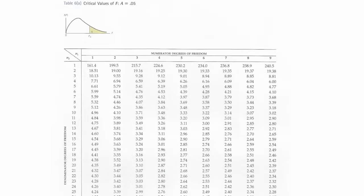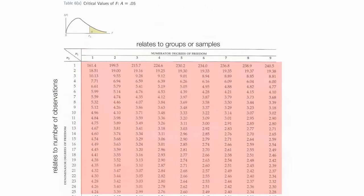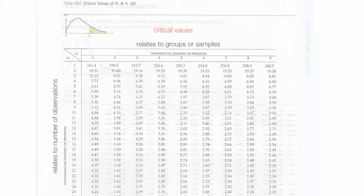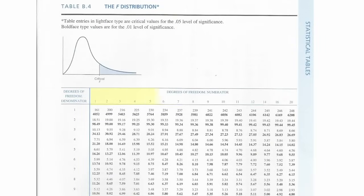Now across the top of all these tables is the degrees of freedom of the numerator, and it relates to the groups or samples. Along the vertical axis is the degrees of freedom of the denominator, and it relates to the number of observations. And in the body of the table are critical values, all your critical values. Often you'll see tables like this, and across the top are degrees of freedom from the numerator, and on the vertical side degrees of freedom for the denominator.